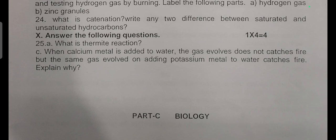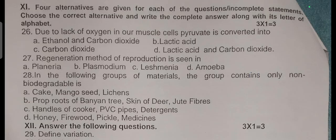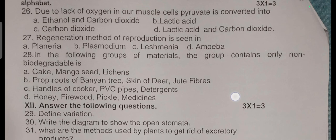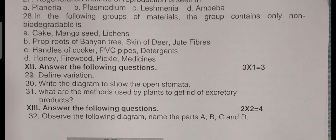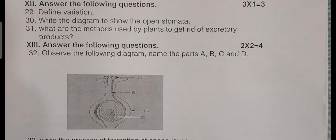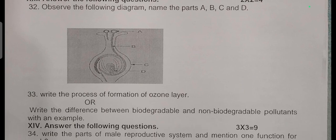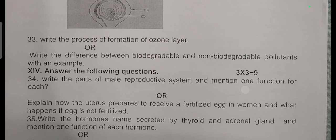Part C: Biology. Three multiple choice questions. Due to lack of oxygen in our muscle cells, pyruvate is converted into dash. Regeneration method of reproduction is seen in dash. In the following groups of materials, the group contains only non-biodegradable items is. Three one-mark questions: Define variation. Draw the diagram to show the open stomata. What are the methods used by plants to get rid of excretory products? Two mark questions: Observe the following diagram and name the parts A, B, C, D. Write the process of formation of ozone layer. Write the difference between biodegradable and non-biodegradable pollutants with examples.